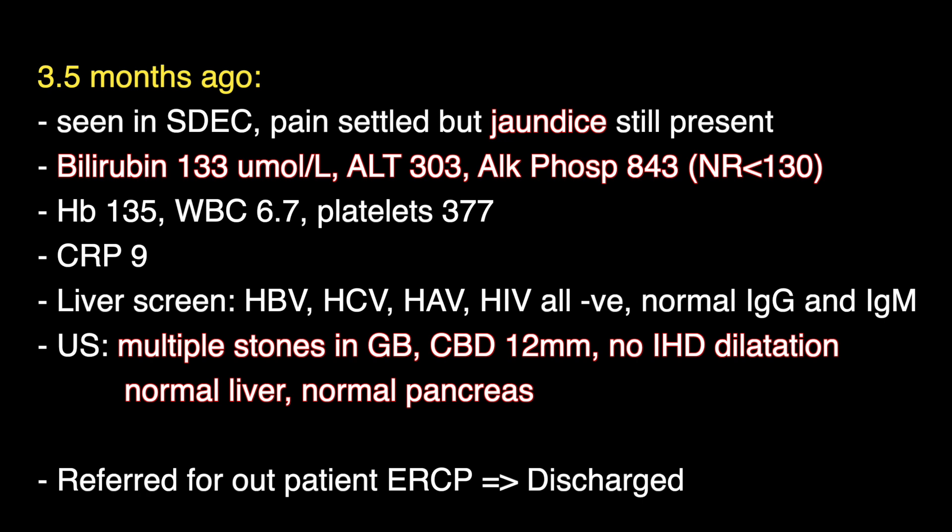Blood tests showed a bilirubin of 133 micromoles per litre with an elevated ALT and alkaline phosphatase. A basic liver screen was negative for common viruses and her immunoglobulin levels were normal. An ultrasound scan performed on the same day showed multiple stones in the gallbladder and a dilated common bile duct. The patient was referred for an outpatient ERCP and discharged home.